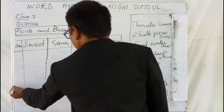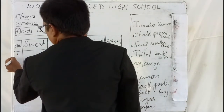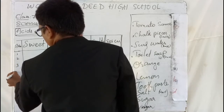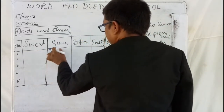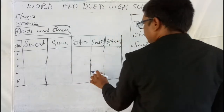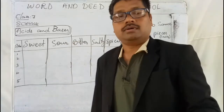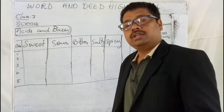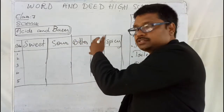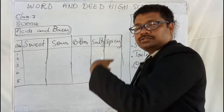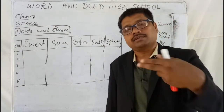I want you to draw this table in your notebook and write at least five food items in each category — sweet, sour, bitter, salty, and spicy. After you make the table ready, I will explain in more detail. If you feel any other tastes beyond these five, just extend the list.